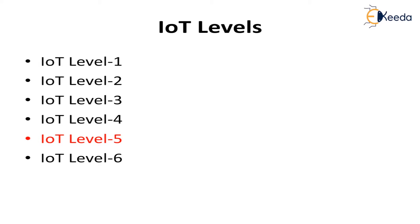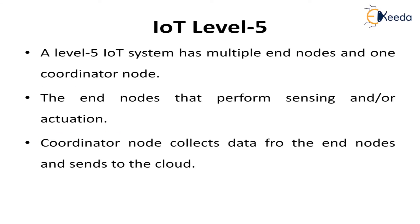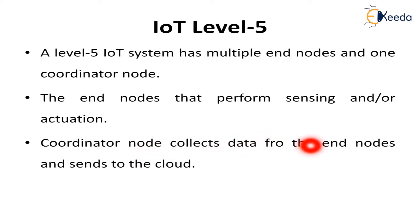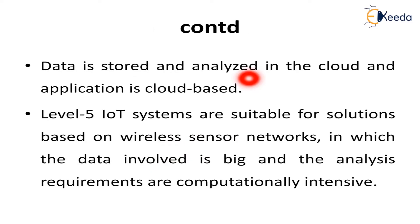IoT applications also allow users to view the system status and view the processed data. Looking at the Level 5 IoT system, it has multiple end nodes and also one coordinator node. The end nodes can perform sensing as well as actuation. The coordinator node collects the data from the end nodes and sends it to the cloud. Data is stored in the cloud, analyzed in the cloud, and the application is cloud-based. Level 5 IoT systems are suitable for solutions based on wireless sensor networks where the data involved is large and the analysis requirements are computationally intensive.